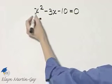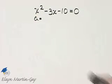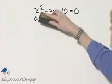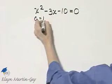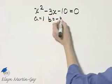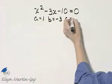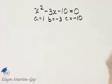And then A is the coefficient of X squared, so A is 1. B is the coefficient of X. B is negative 3. And C is this constant, negative 10.